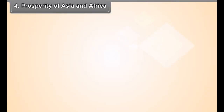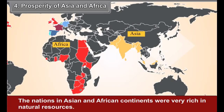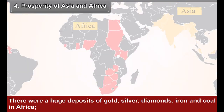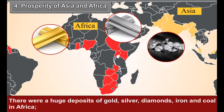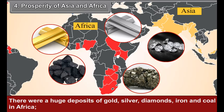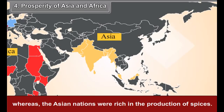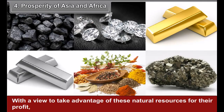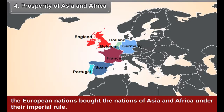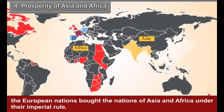Fourth, prosperity of Asia and Africa: The nations in the Asian and African continents were very rich in natural resources. There were huge deposits of gold, silver, diamonds, iron, and coal in Africa, whereas the Asian nations were rich in the production of spices. With a view to take advantage of these natural resources for their profit, the European nations brought the nations of Asia and Africa under their imperial rule.